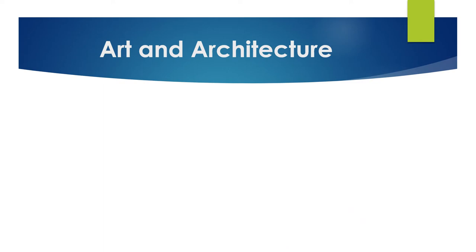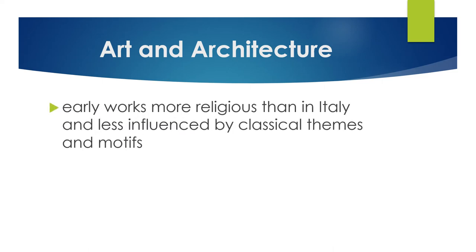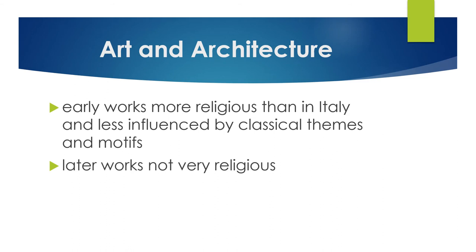Regarding art and architecture, the Low Countries — modern Netherlands and Belgium — were heavily influenced by the Italian Renaissance and produced especially important artists. Their early works were much more religious than the Italians' and less influenced by classical themes and motifs. However, later works after the Reformation were not very religious, partly because many Protestants did not agree with the idea of icons in churches, so the Protestant church was not a sponsor for Northern Renaissance religious art.